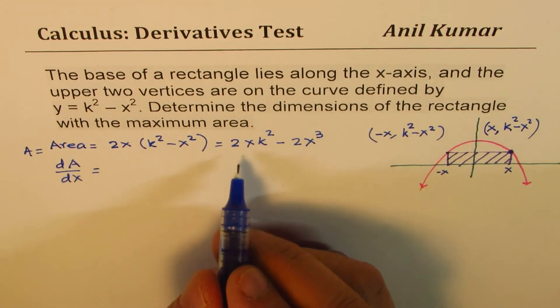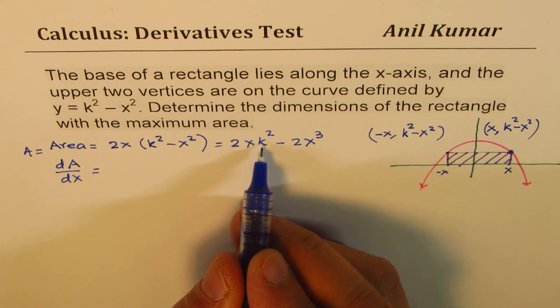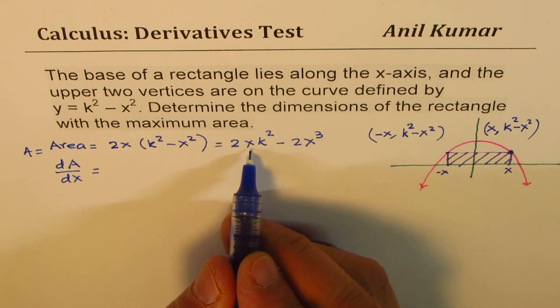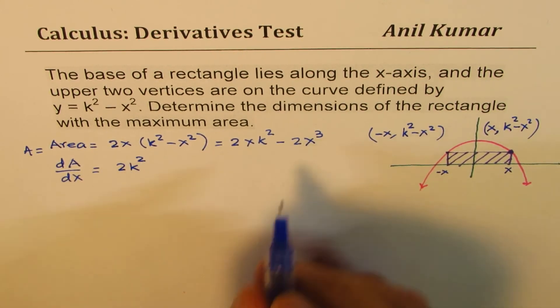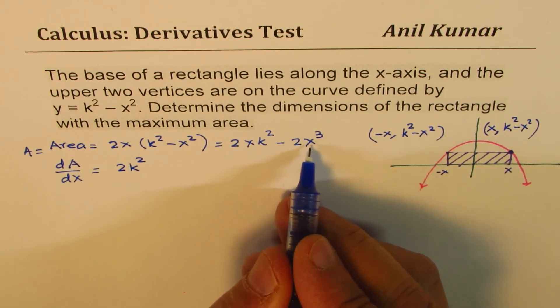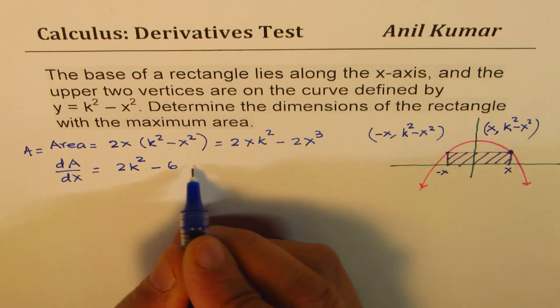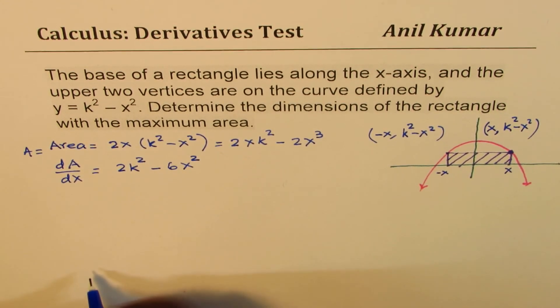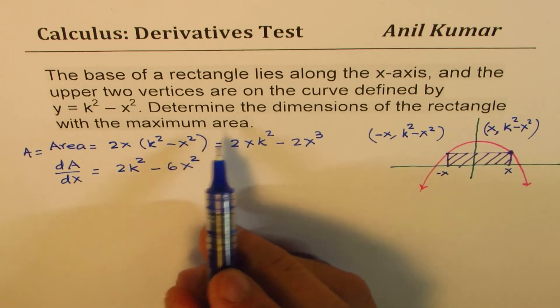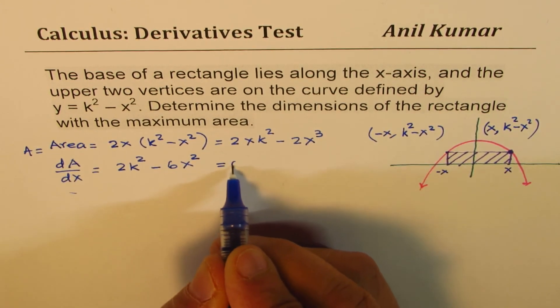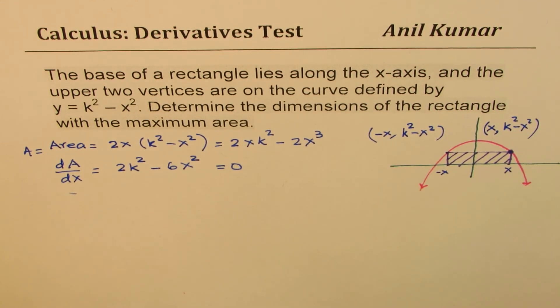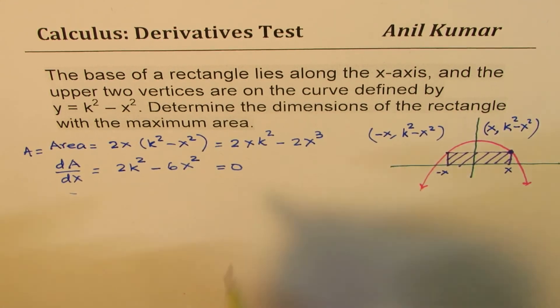Now, it's easier to write the derivative. So k is a constant. Remember that. X derivative is just 1. So we are left with 2k squared here. And the derivative will be 6x squared. Now, to maximize the area, the derivative should be 0. So we are writing this to 0 only to find the critical number.